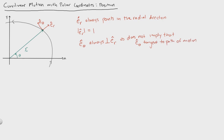e theta might look tangent in this path, and it might be — but it does not have to be tangent to the path. It can be, but it does not have to be. What it has to be is that e theta is perpendicular to er.